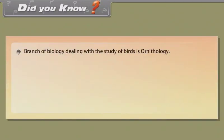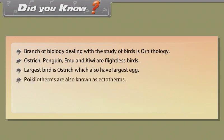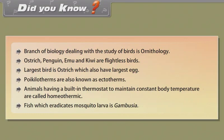Did you know? The branch of biology dealing with the study of birds is ornithology. Ostrich, penguin, emu and kiwi are flightless birds. The largest bird is the ostrich, which also has the largest egg. Poikilotherms are also known as ectotherms. Animals having a built-in thermostat to maintain constant body temperature are called homeothermic. The fish which eradicates mosquito larvae is Gambusia.